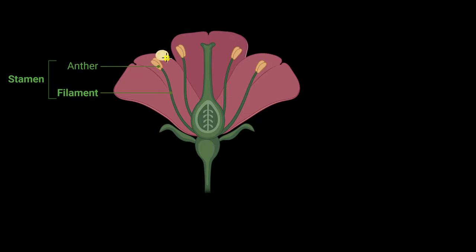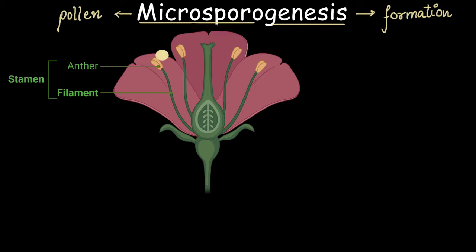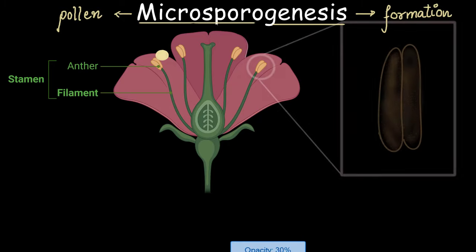This formation of pollen inside the anther is called microsporogenesis, where microspore means pollen and genesis means formation. One anther does not give rise to just one pollen — it gives rise to many, many pollens. We will see in a minute how this anther does that. So let's have a closer look at the anther.